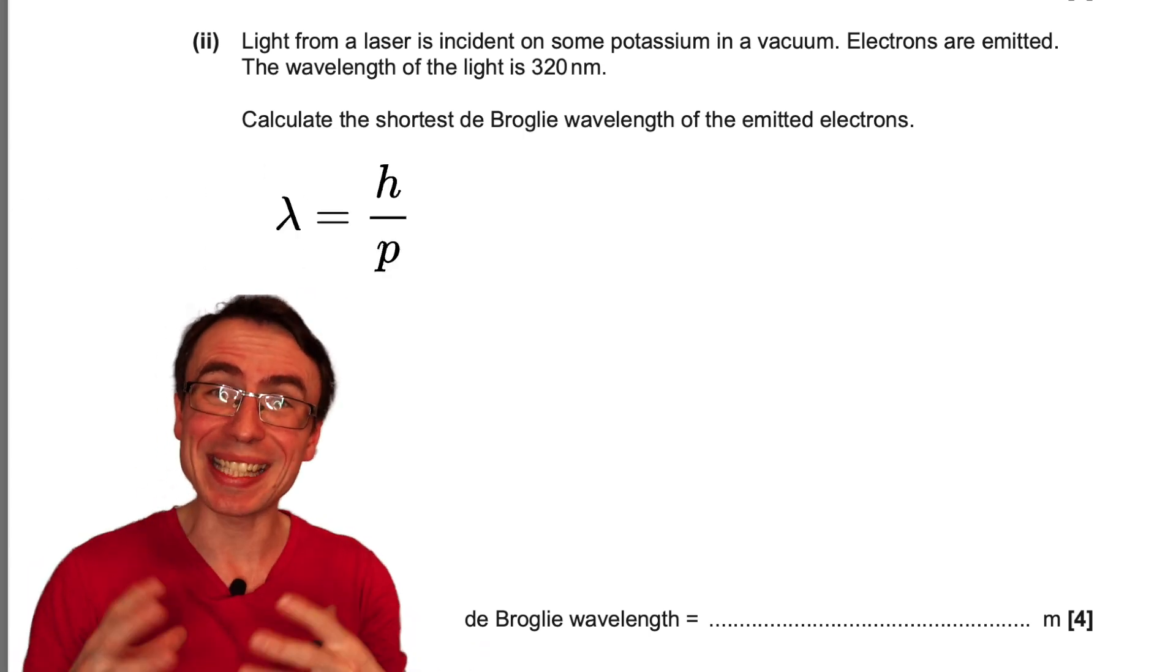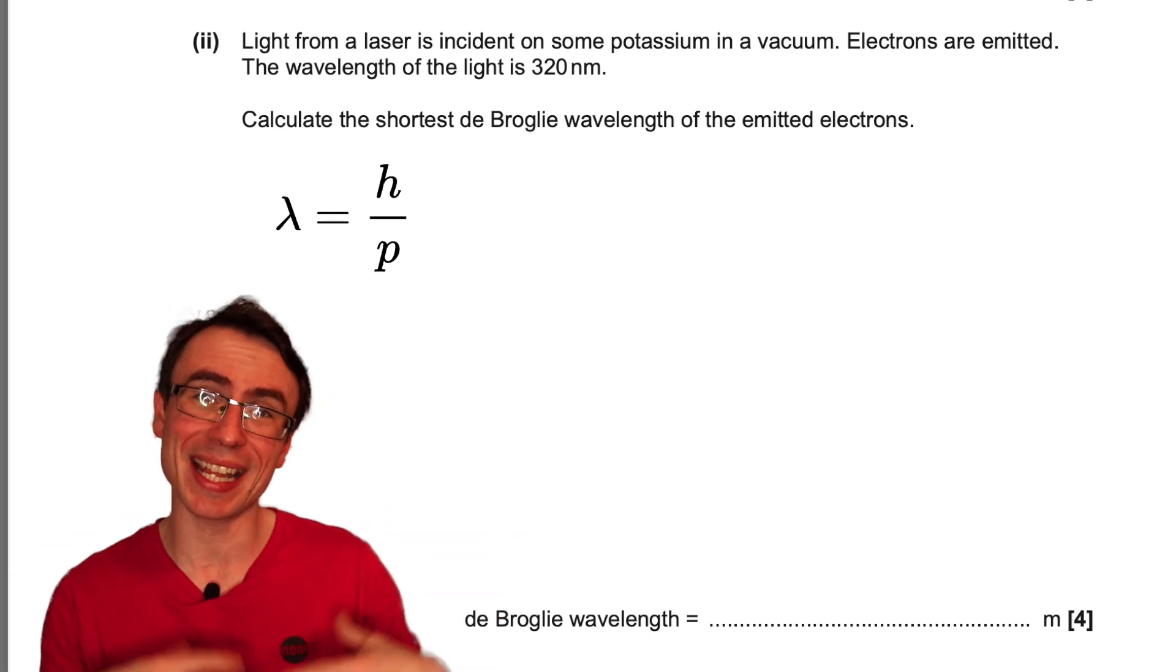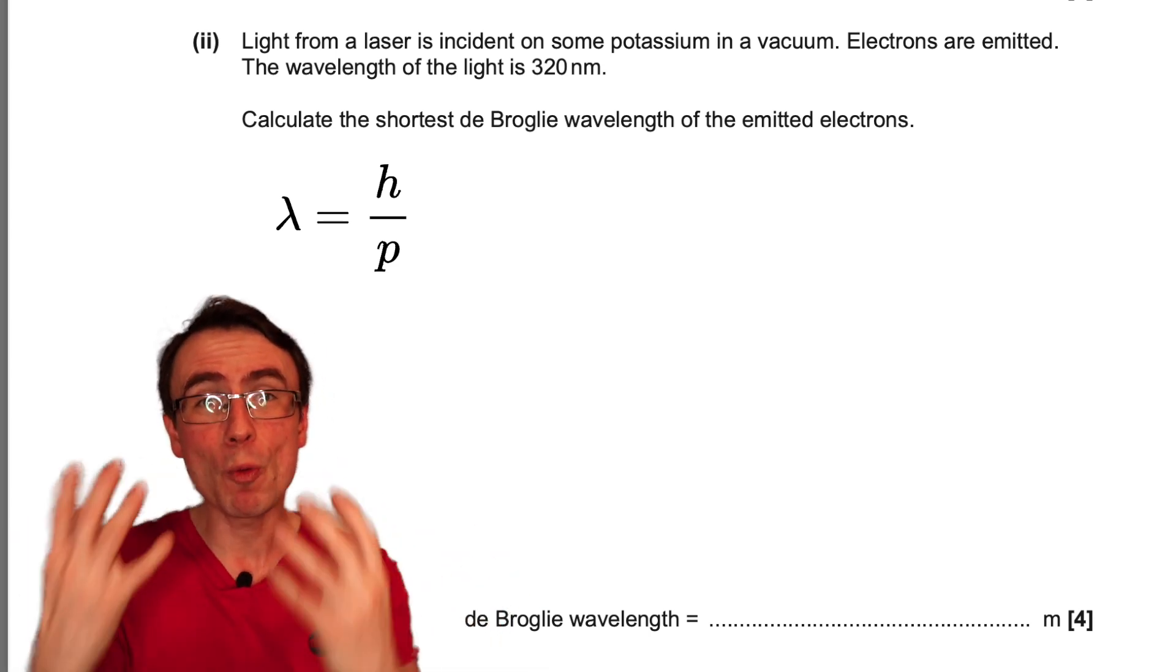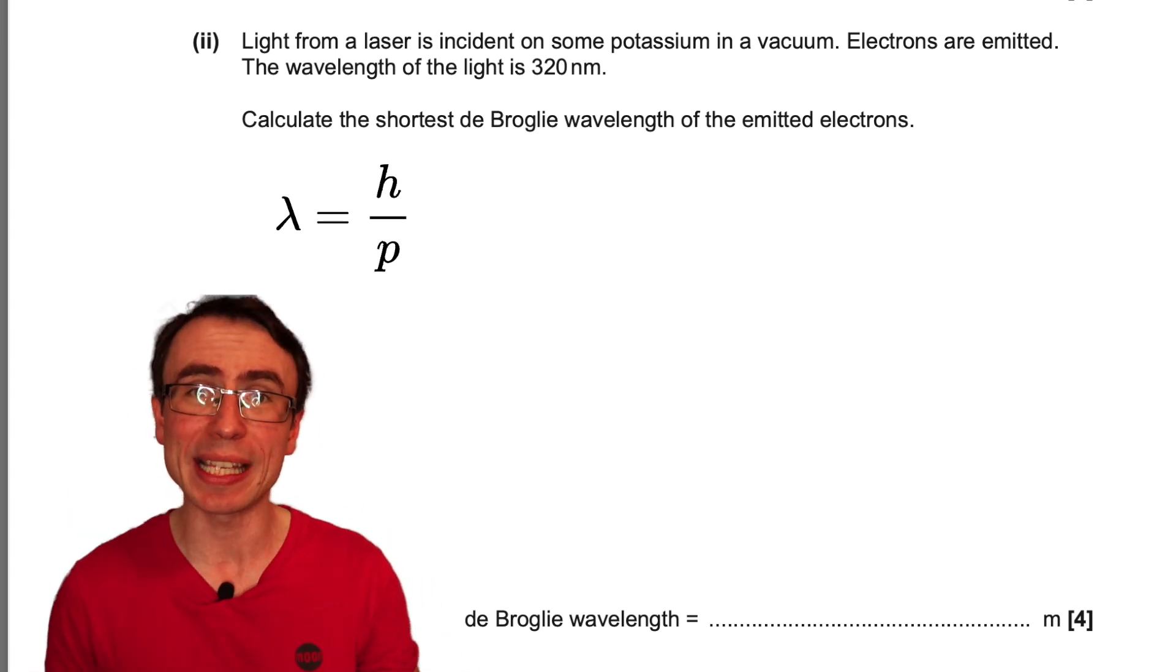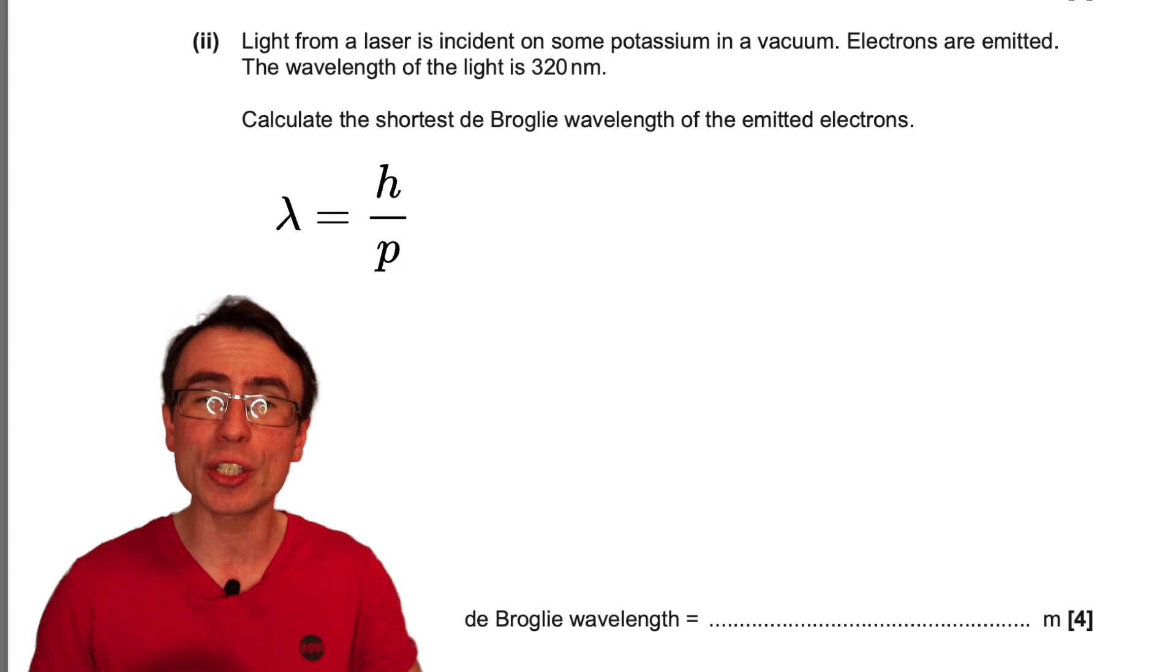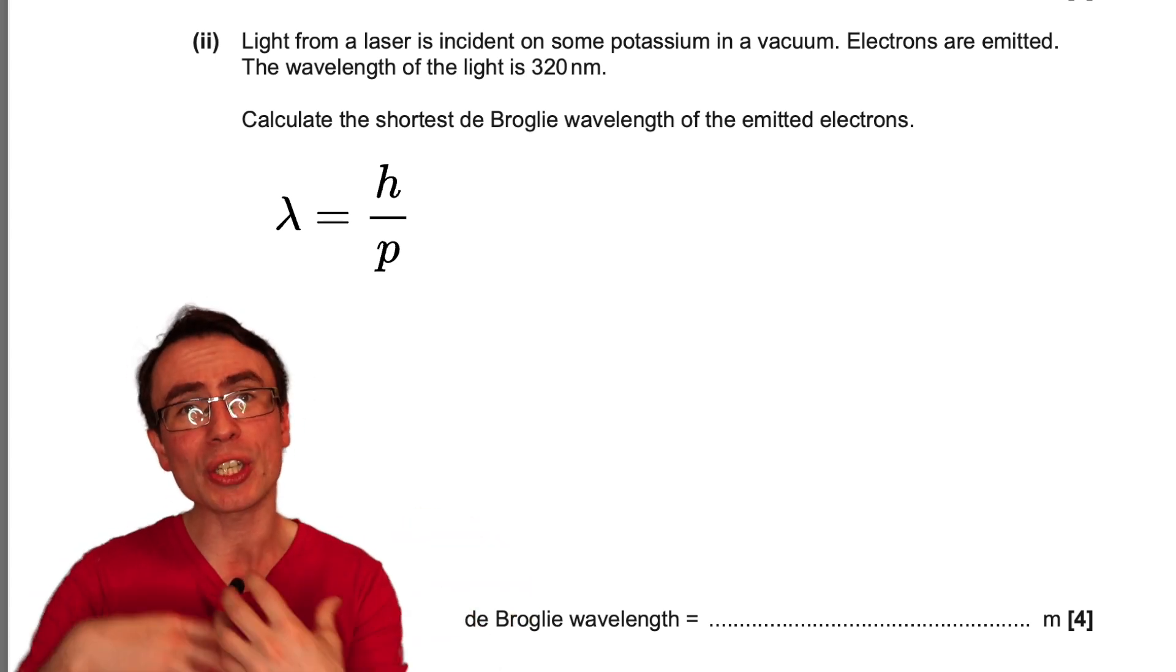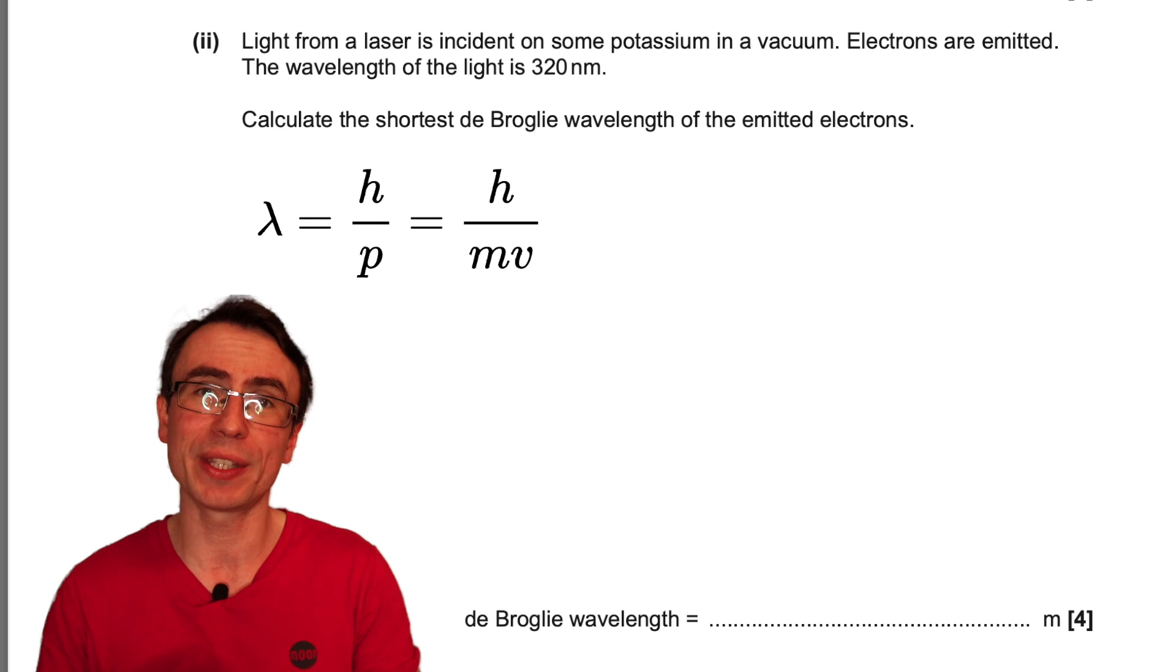Actually confusing the symbols in this equation is a very common mistake in A-level physics. The wavelength of the particle, in this case the electron, is given by Planck's constant h divided by p which stands for the momentum of the electron, its mass multiplied by its velocity.